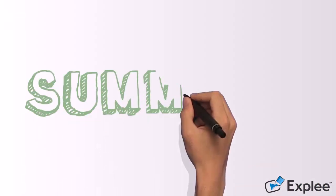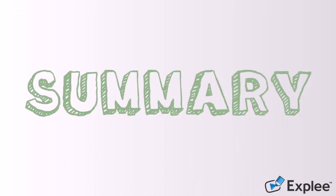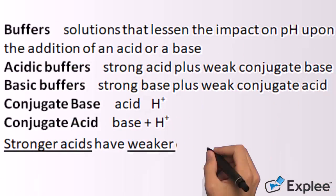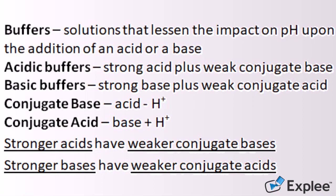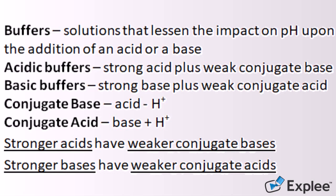For the summary and some clarifications, you can write these down or take screenshots. Buffers are solutions that lessen the impact on pH upon the addition of an acid or a base. Acidic buffers are strong acid plus weak conjugate base. Basic buffers are strong base plus weak conjugate acid. The conjugate base of an acid is the acid minus H plus. The conjugate acid of a base is the base plus H plus. Stronger acids have weaker conjugate bases. Stronger bases have weaker conjugate acids.